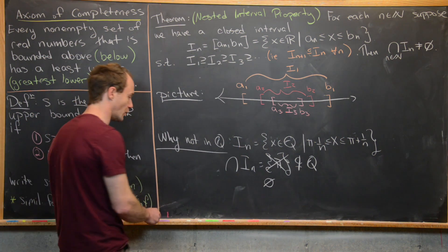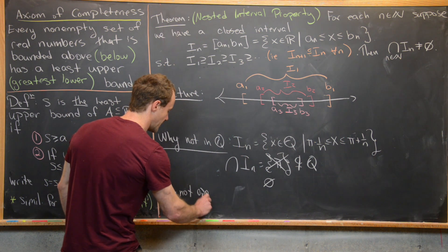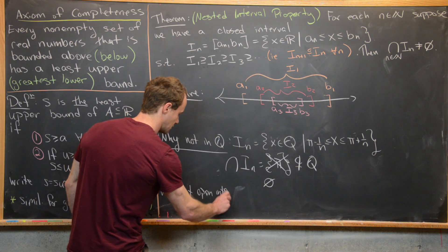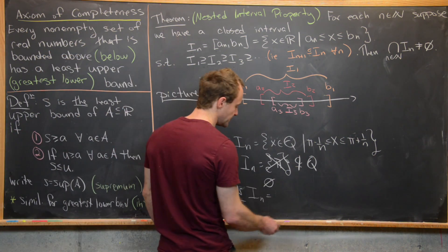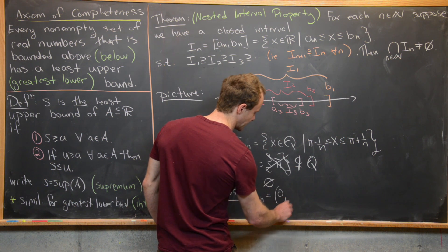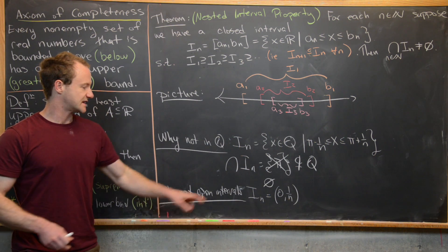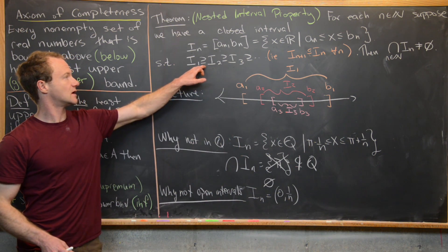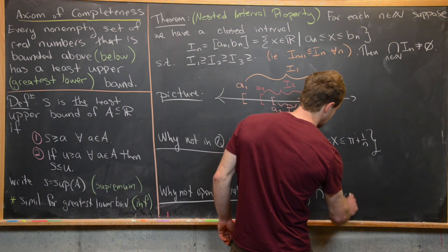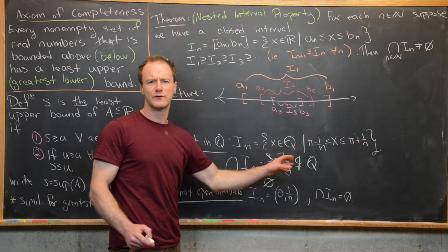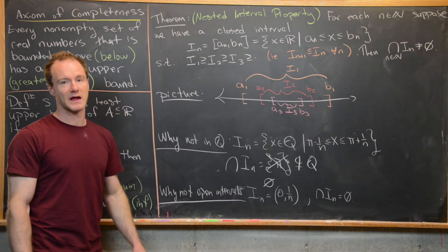Another thing to note: why not open intervals? Let I_N be the open interval (0, 1/N). This is still nested as required, but if you take the intersection of all of these, you get the empty set.